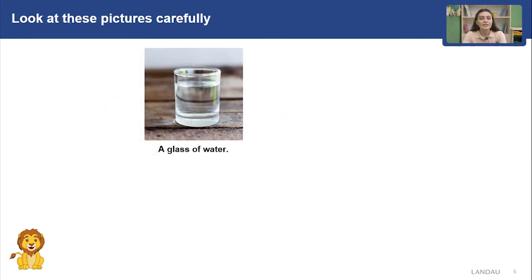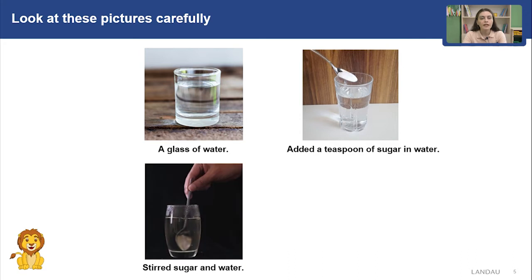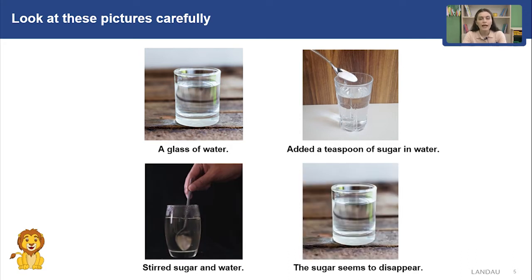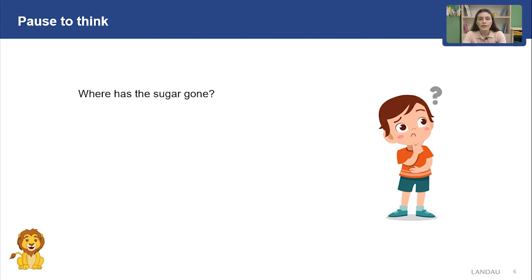Now let's look at the pictures carefully. We took a glass of water, added a teaspoon of sugar, stirred it, and in the last picture we see that the sugar has disappeared. How do you think — where has the sugar gone? Pause the video and think about it.